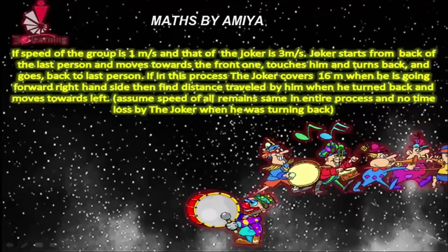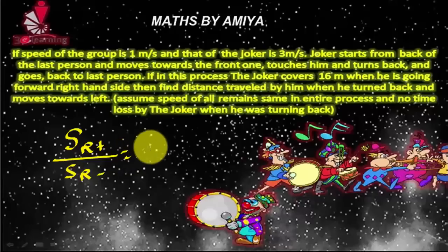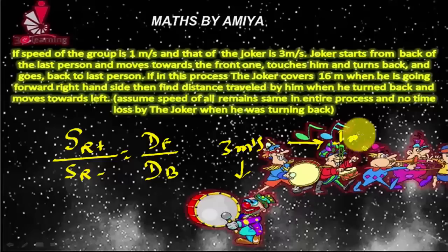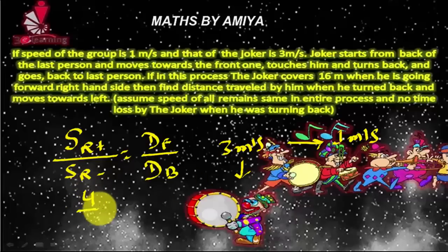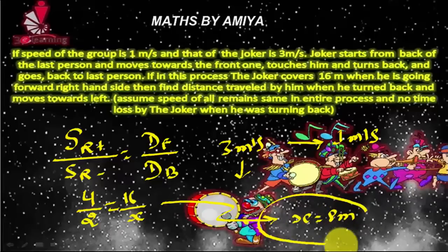Now, let's solve this question with the direct method. Our direct formula is: speed relative plus upon speed relative minus equals distance forward upon distance backward. Here, the joker's speed is 3 m/s and the group's speed is 1 m/s. So speed relative plus is 3 plus 1 equals 4, and speed relative minus is 3 minus 1 equals 2. Distance forward is 16 meters. So distance backward equals x. Solving this, x equals 8 meters. Our answer is 8 meters.